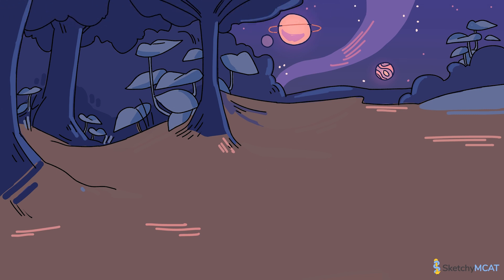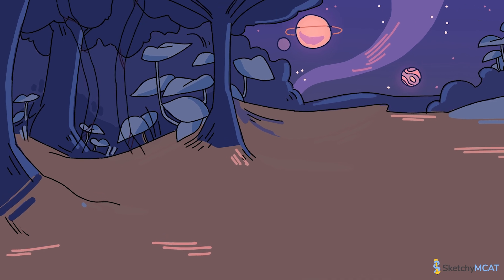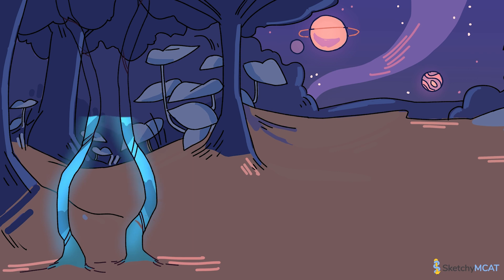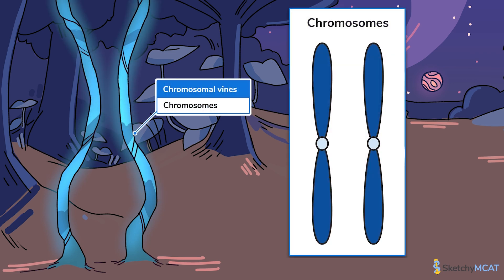Every somatic cell of an organism contains the same set of genetic information. But how is that information stored? Chromosomes are tightly packed bundles of DNA and protein. In eukaryotic organisms, the vast majority of genetic information is stored in chromosomes found in each cell's nucleus.